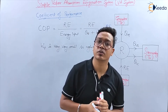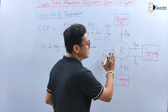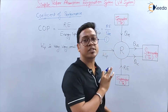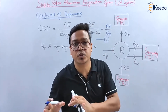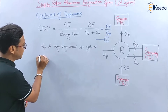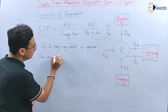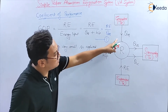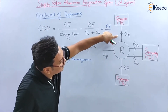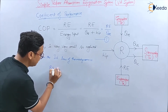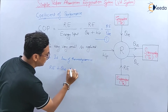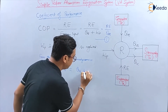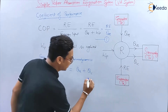Now using energy conservation: energy going into the system is equal to energy going out of the system. From the first law of thermodynamics, with WP neglected, the energy inputs are QG and RE, so: RE + QG = QA + QC, where QA and QC are the energy outputs. This is equation number 2.